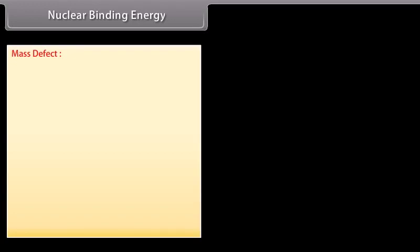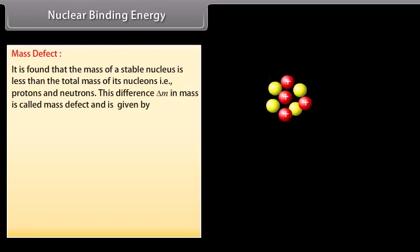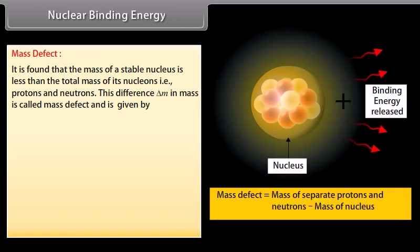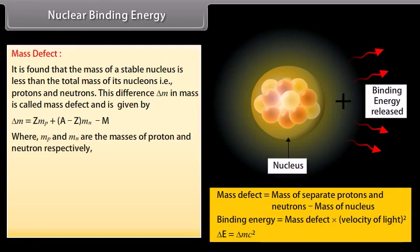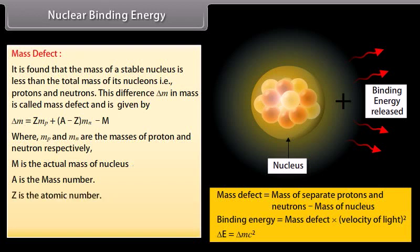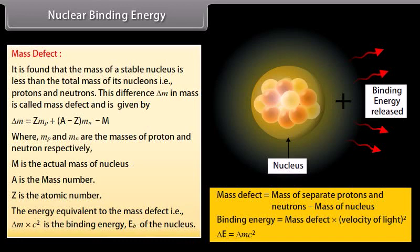Nuclear binding energy: Mass defect. It is found that the mass of a stable nucleus is less than the total mass of its nucleons, that is protons and neutrons. This difference delta M in mass is called mass defect and is given by delta M is equal to ZMP plus (A minus Z) into MN minus M, where MP and MN are the masses of proton and neutron respectively, M is the actual mass of nucleus, A is the mass number, Z is the atomic number. The energy equivalent to the mass defect, that is delta M into C squared, is the binding energy EB of the nucleus.